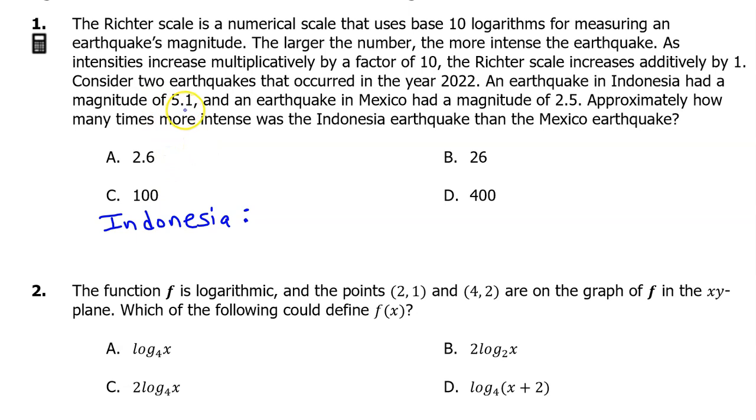The Indonesia earthquake had a magnitude of 5.1, but the intensity is actually 10 to the 5.1 power. The Mexico earthquake had a magnitude of 2.5, but the intensity was actually 10 to the 2.5 power. If you want to know how many times more intense the Indonesia earthquake was, you need to divide the intensity of the Indonesia earthquake by the intensity of the Mexico earthquake.